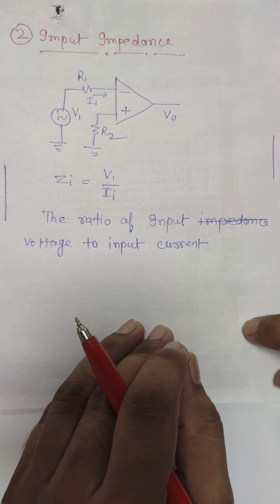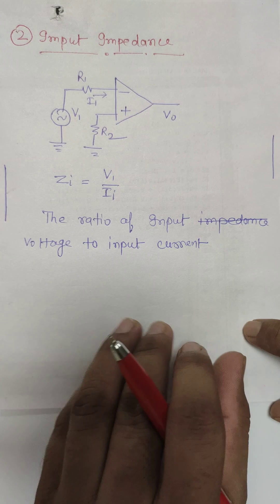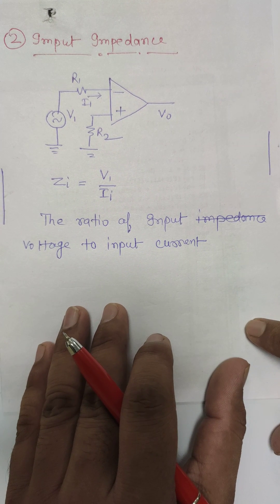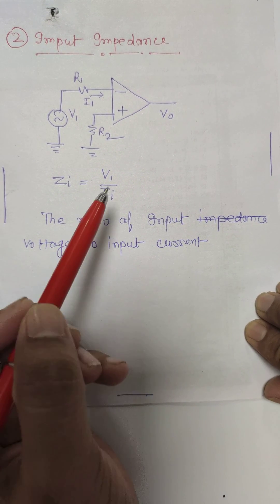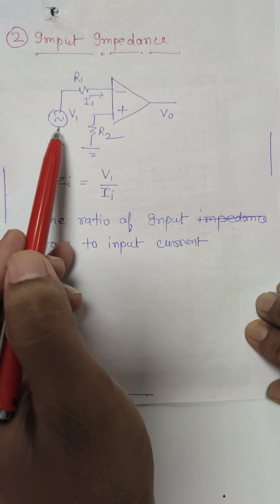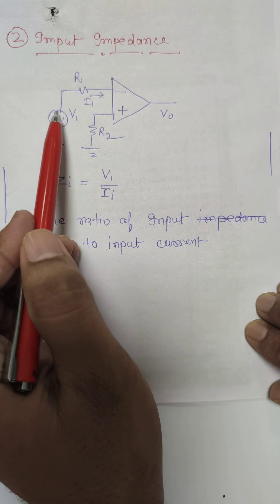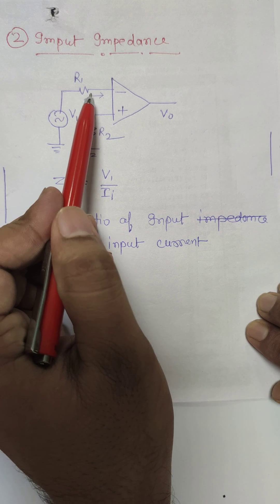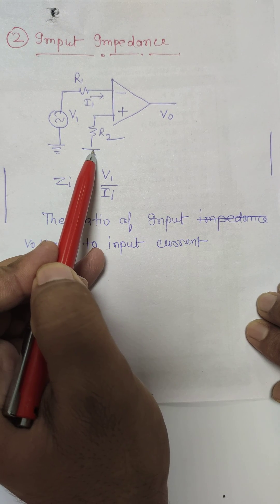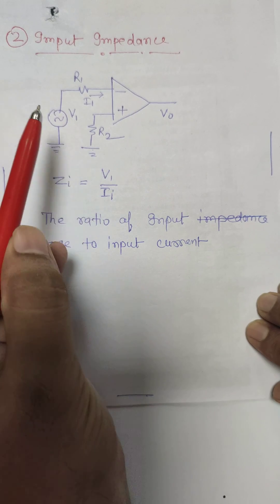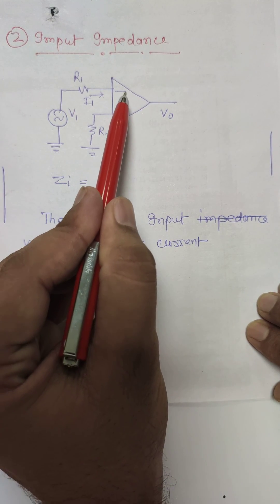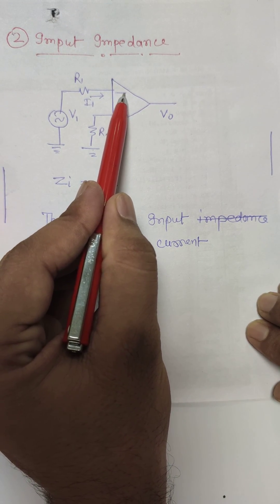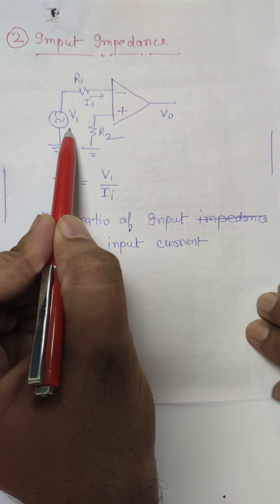Today I will talk about the second property of op-amp, that is input impedance. For input impedance, we take the voltage at any terminal of the op-amp and the current at the same terminal when the other terminal is grounded. Here in this case, I have considered the negative terminal of the op-amp and applied one voltage source V1 here.